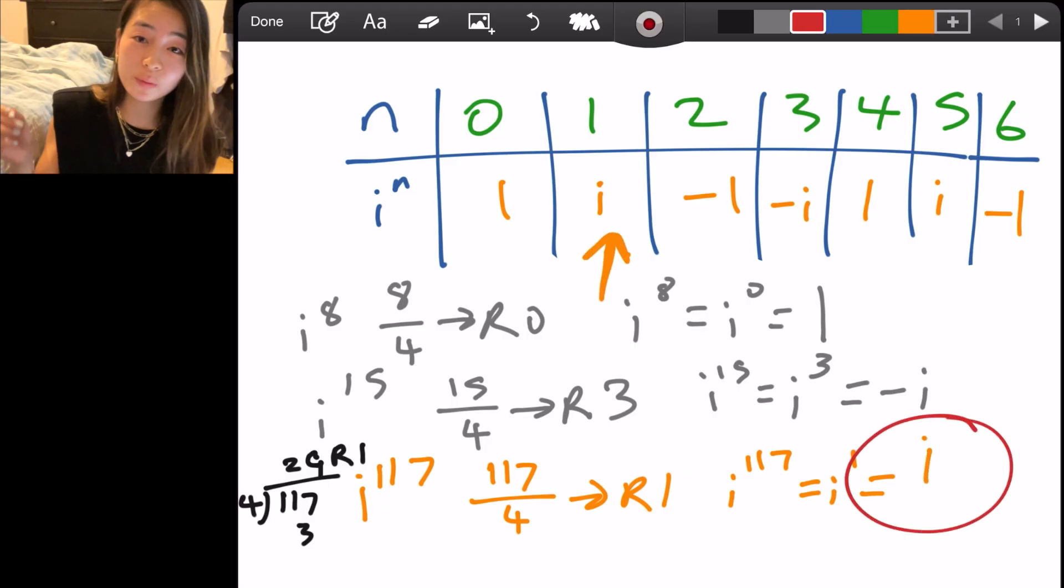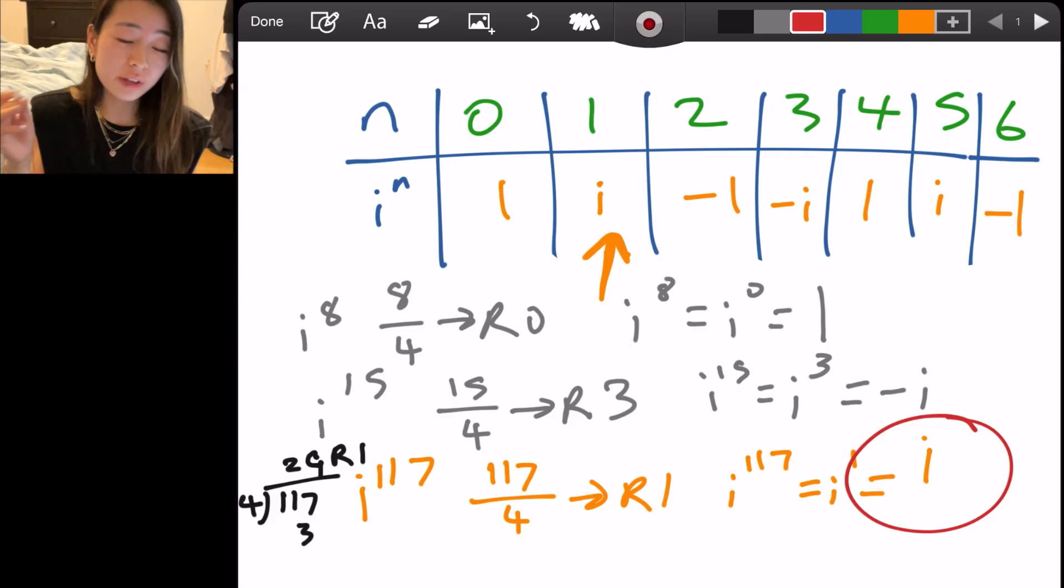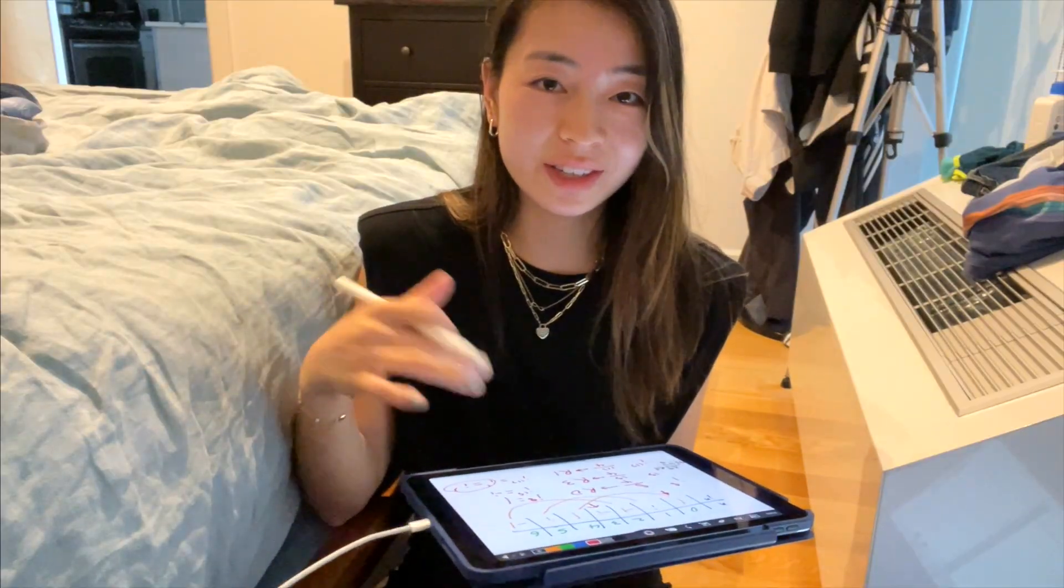And there you have it. If you know the pattern, it's super easy. And on the spot, if you forget it, you can derive it too. So that's basically how you can guarantee to get every problem right because even if you forget something, you can get the pattern yourself.